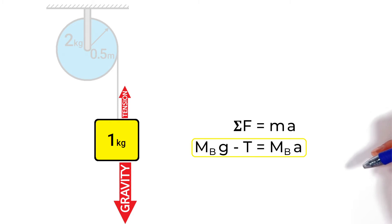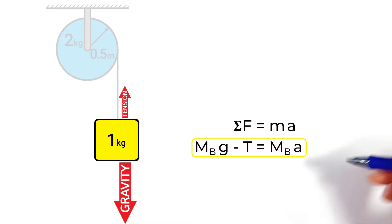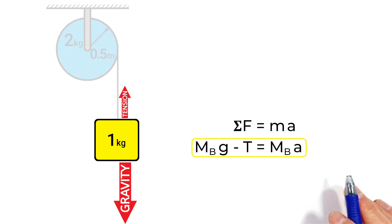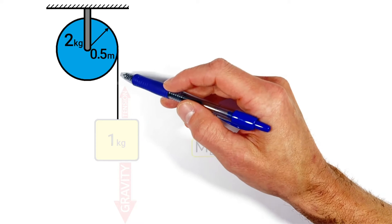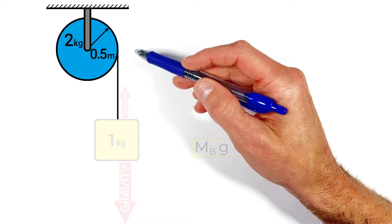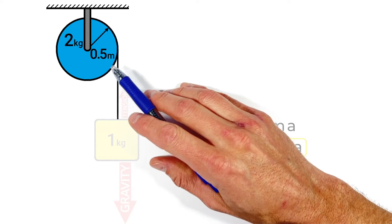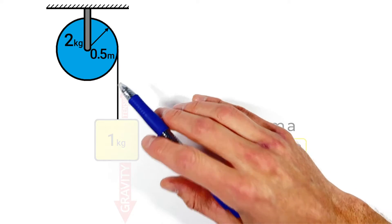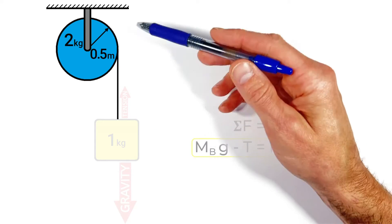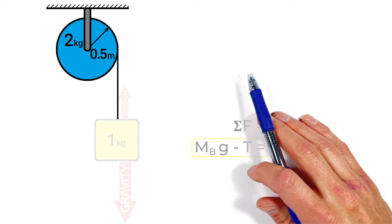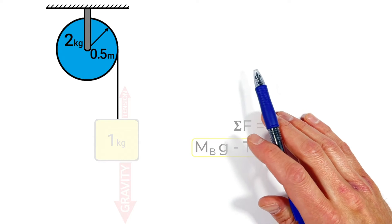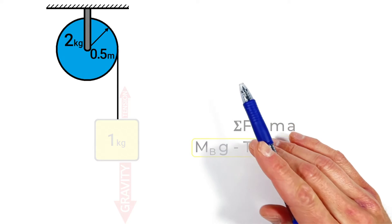Looking just at this equation, we can't solve for A, the acceleration of the block, because we have one equation with two unknowns. So we need to look at our other object to generate another equation. It's tempting to apply Newton's second law to the pulley, but the pulley isn't moving in a straight line, so we're going to apply the rotational version of Newton's second law instead.